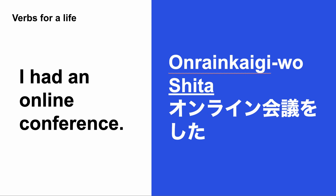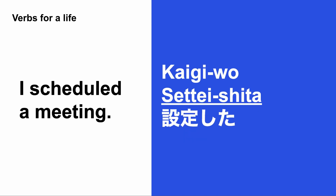I had an online conference: オンライン会議をした / オンライン会議をしました. I scheduled a meeting: 会議 means a meeting. 会議を設定した or 会議をスケジュールした — I scheduled a meeting.